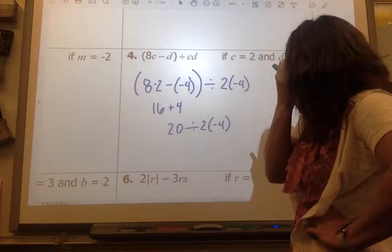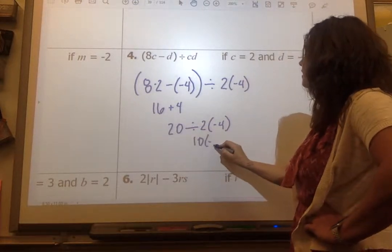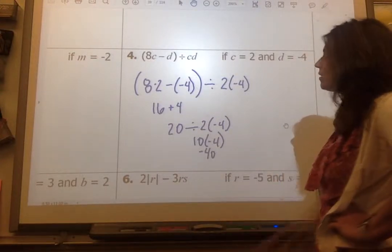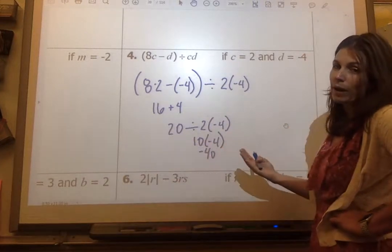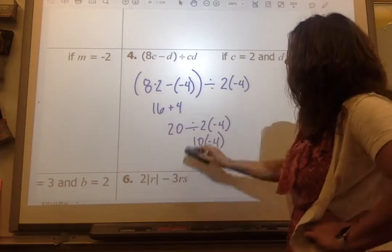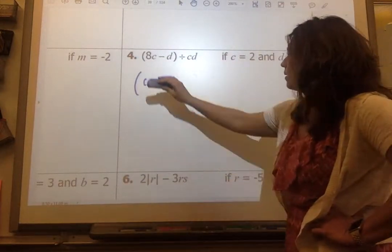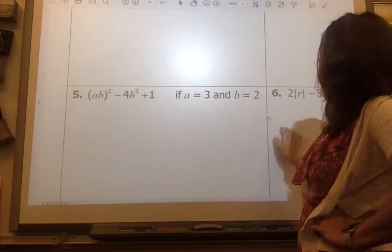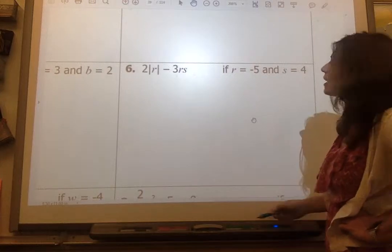When I look inside my parentheses here, I have this minus and negative, which becomes positive. So I have 16 plus 4. 16 plus 4 is 20 divided by 2 times negative 4. I'm going to do 20 divided by 2, which is 10, times negative 4. And I get negative 40.